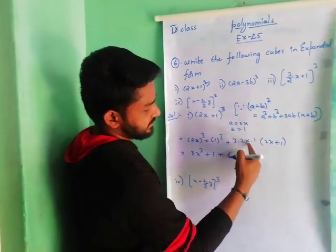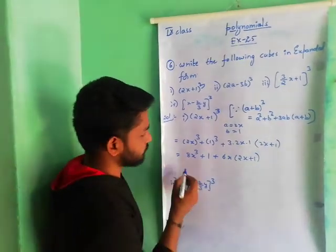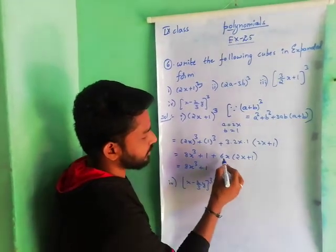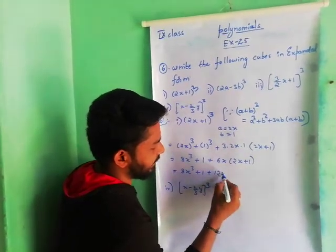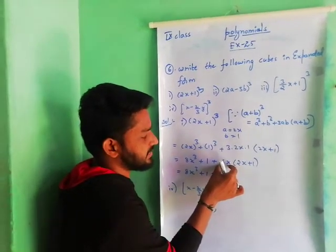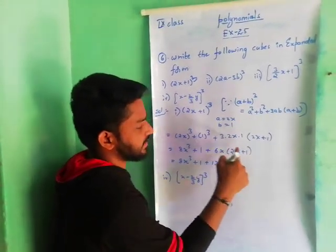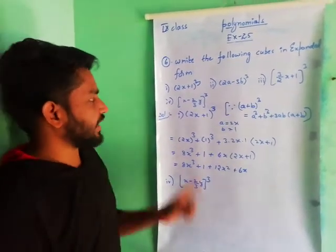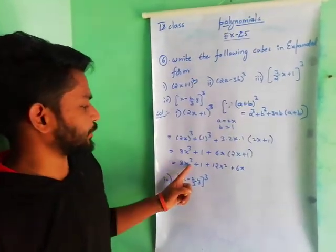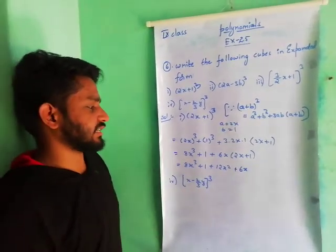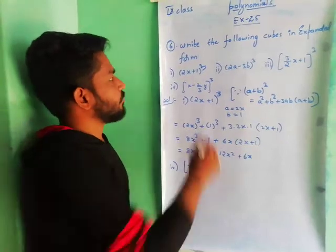So (2x) whole cube means 8x cube, 1 cube means 1, 3 into 2 is 6, x into 1 is x. So 6x into (2x + 1): 6x into 2x is 12x squared, plus 6x into 1 is 6x. So the final answer by using (a + b) whole cube is: 8x cube plus 1 plus 12x squared plus 6x. Simply substitute the a and b values into the given formula. First one is completed.